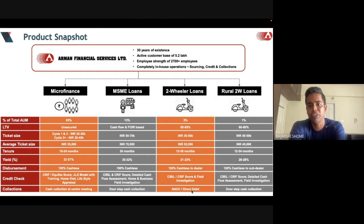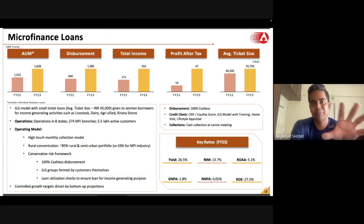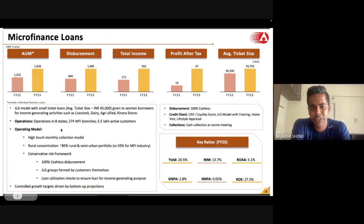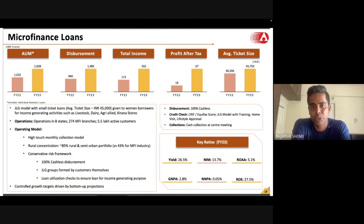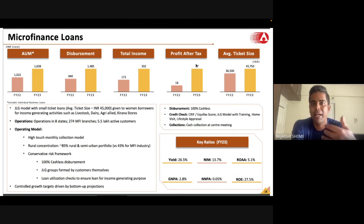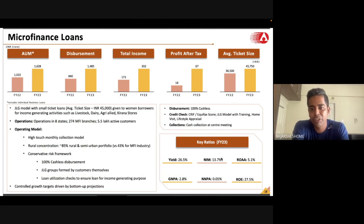You can pause the video and read the tenure details. Now let's understand each segment in more detail. Microfinance is 83 percent of their book. Look at how the AUM, disbursal, PAT, and ticket size have all gone up on a YoY basis. This shows the microfinance space has come back strongly after COVID, and Arman has taken full advantage. Their PAT went up from 18 to 67 crore — almost three and a half times, which is stupendous.